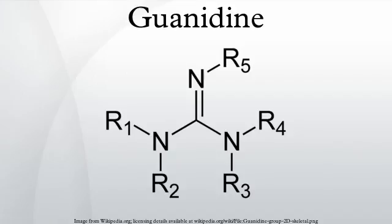Guanidine is the compound with the formula HN(C)(NH2)2. It is a colorless solid that dissolves in polar solvents. It is a strong base that is used in the production of plastics and explosives. It is found in urine as a normal product of protein metabolism.